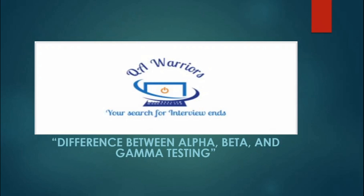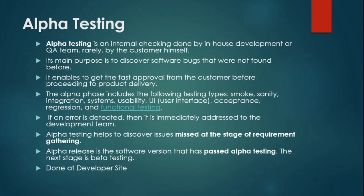Let's start with alpha testing. It is an internal checking that is done by the in-house development or QA team. The main purpose of alpha testing is to discover bugs that were not found before. Alpha testing is done to get the approval from the customer before proceeding to deployment of the product into the production environment.